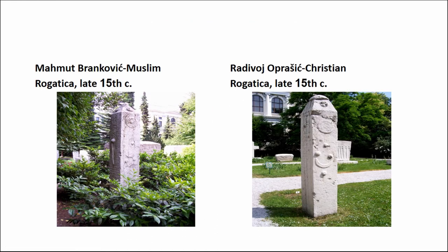Then we have the question of shared epigraphy. These two tombstones are now located in the yard of the National Museum in Sarajevo, and they are absolutely identical. We know by the names — Mahmud and Radevoj — that one is Christian and one is Muslim, but the inscriptions are identical. They are written in the same way and commemorate the same thing, with completely similar iconography.